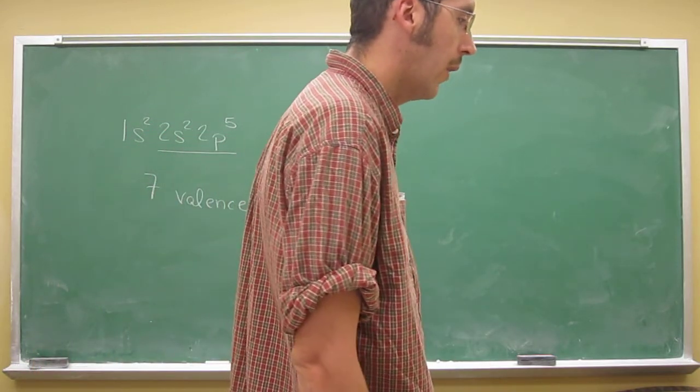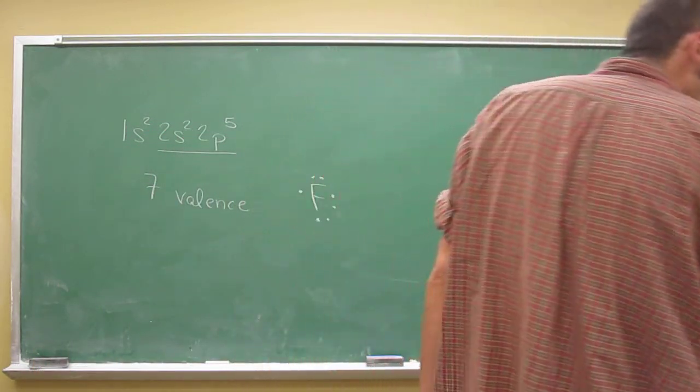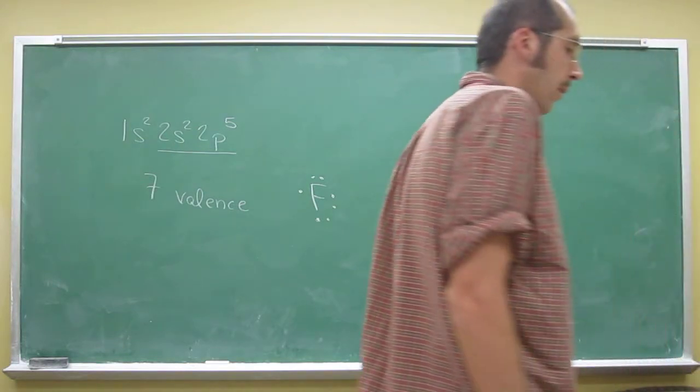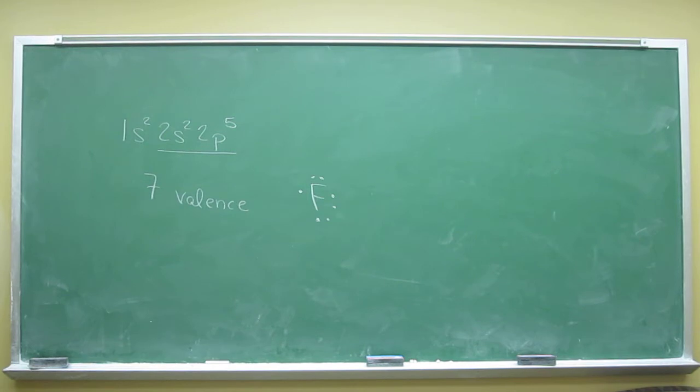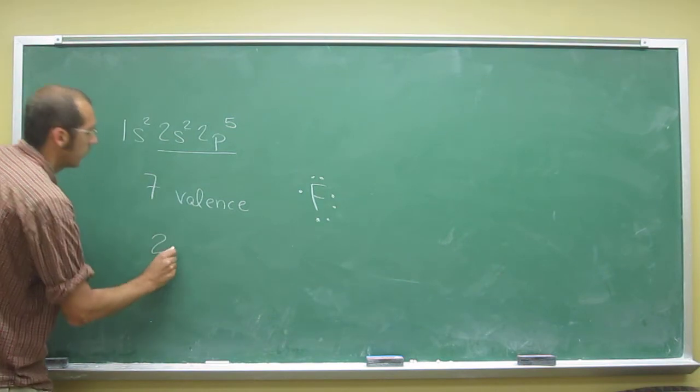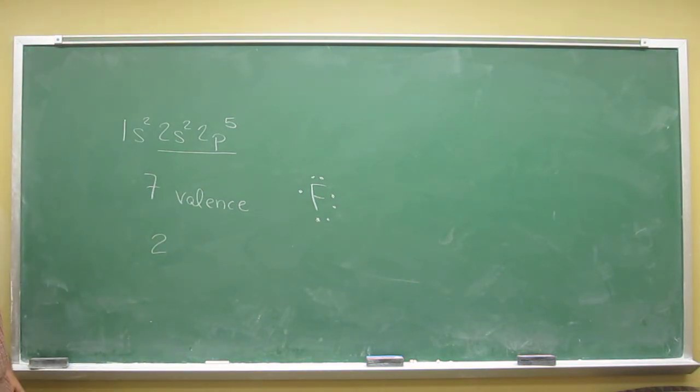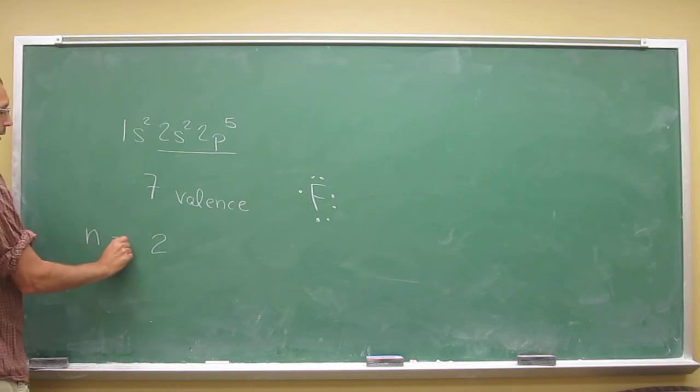So what is the energy level of these electrons? Well, again, the energy level is what period they're on. So the energy level here is 2 for fluorine. And in fact, you will a lot of times designate that as n energy level.